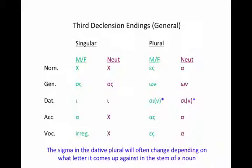For the masculine and feminine endings, the nominative is going to be unique. The genitive ending is -os, dative -i, accusative -a. The vocative for our purposes will be irregular — most of the time it will mirror the nominative, but sometimes it will be a little off. In the plural for masculine and feminine: -es, -on, -si with a movable nu, and -as. Now this dative plural -si with the movable nu is where the endings will vary from stem to stem, because this sigma will butt up against other consonants and will either drop, change, or stay the same.